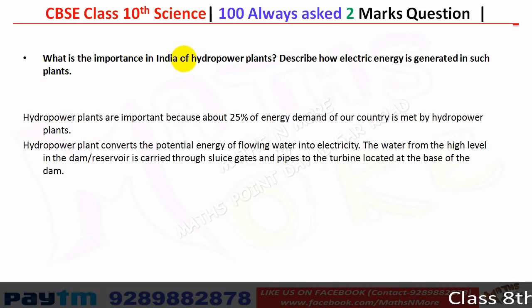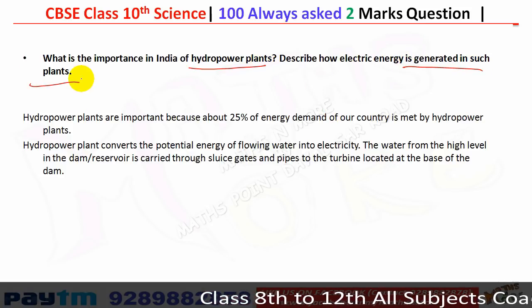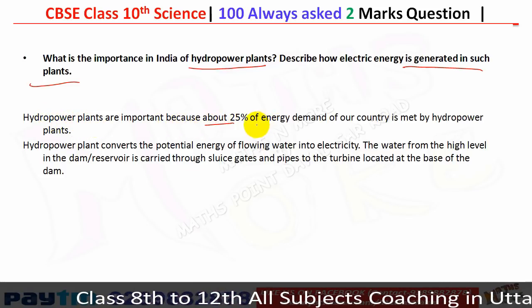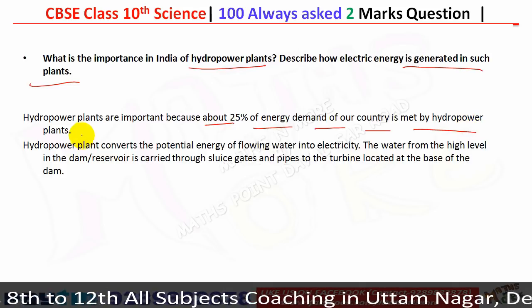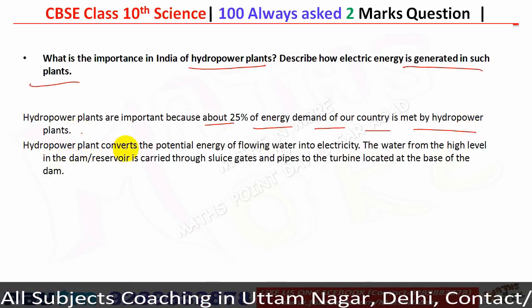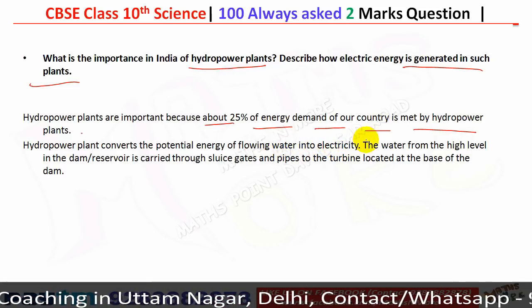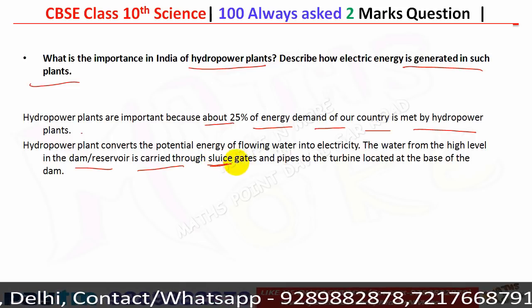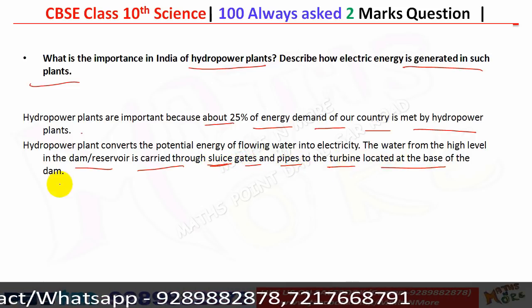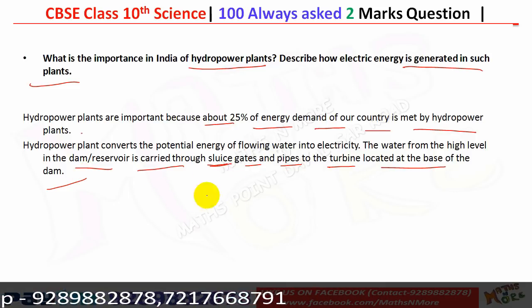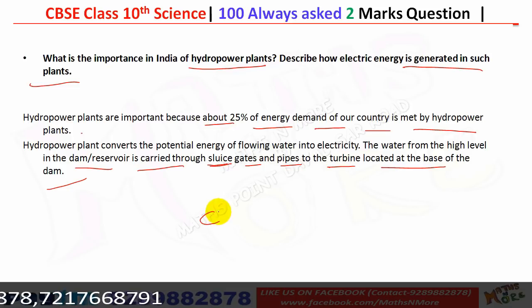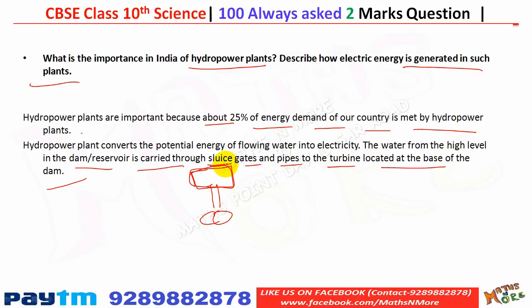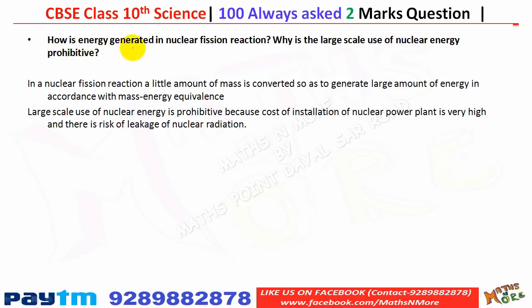Hydropower plants are important because they meet about 25% of the country's energy demand. They convert the potential energy of flowing water into electricity. Water from a high level in the dam or reservoir is carried through sluice gates and pipes to turbines at the base of the dam. The flowing water rotates the turbines, and a dynamo fitted in the turbine converts mechanical energy into electrical energy.